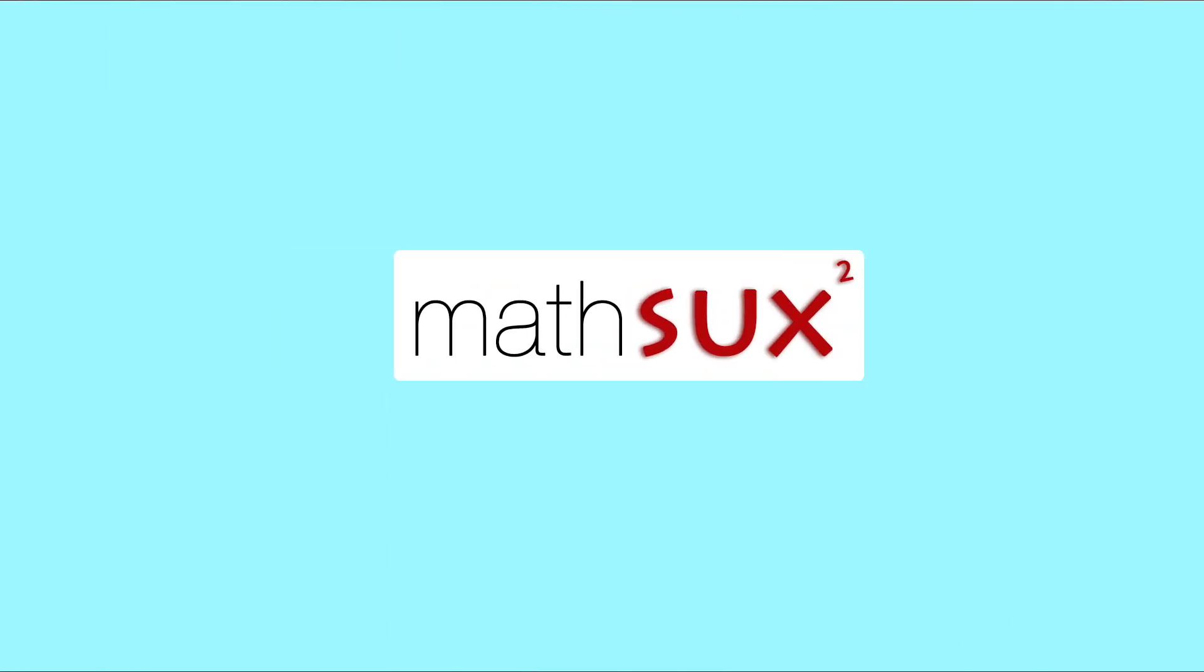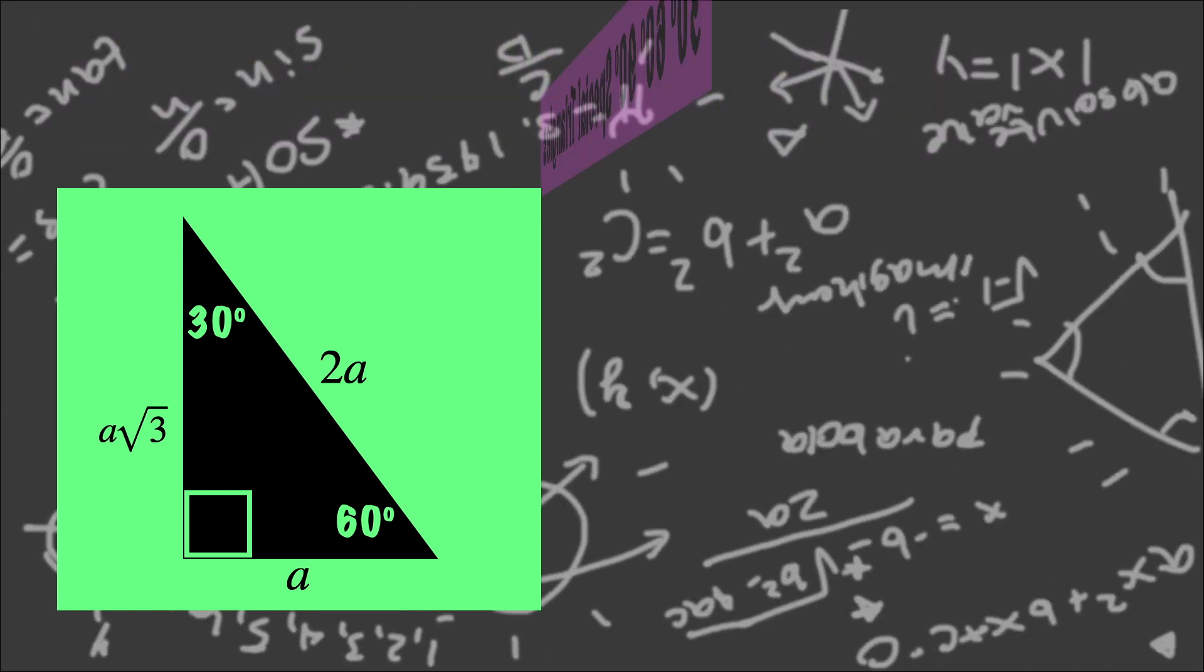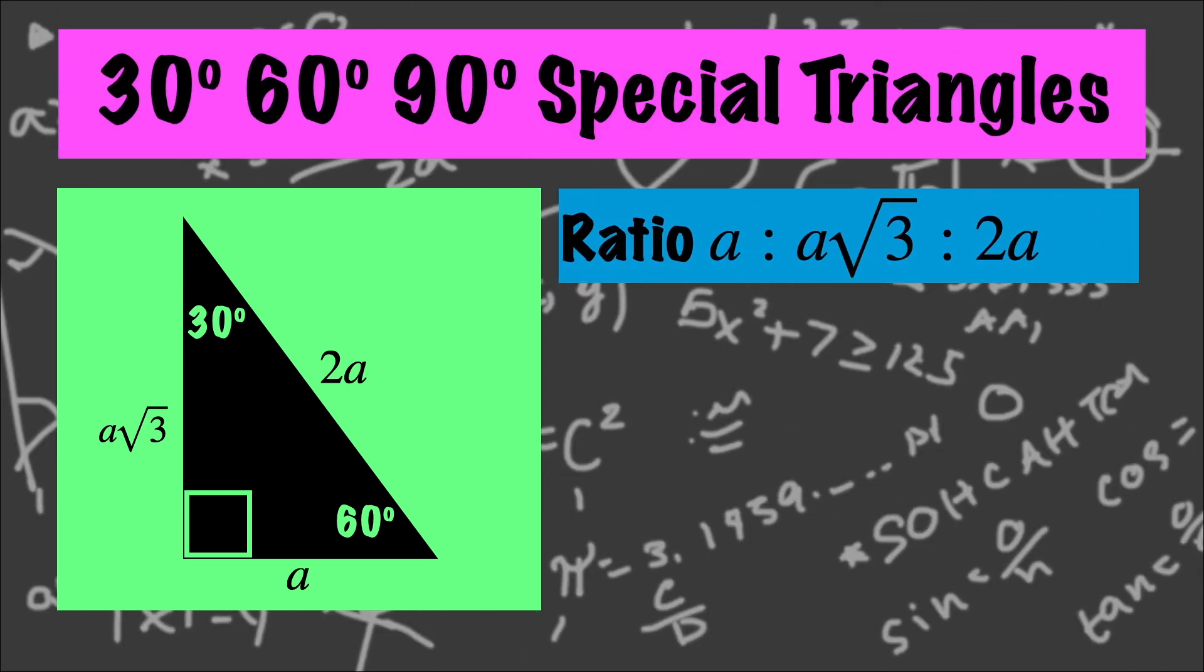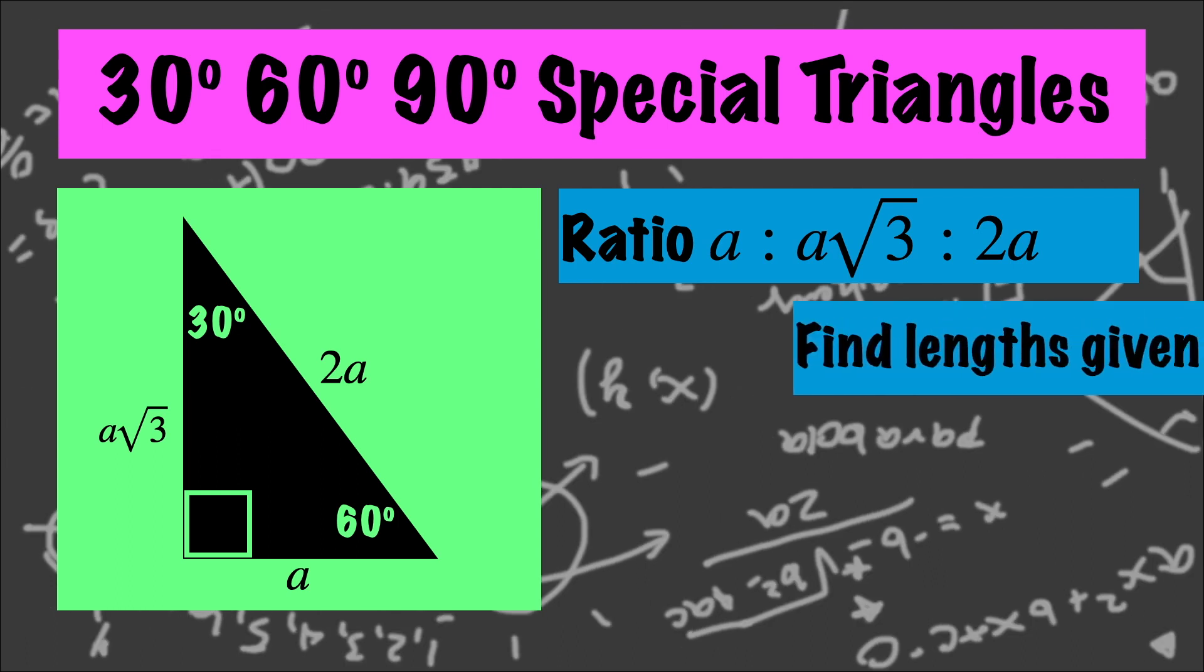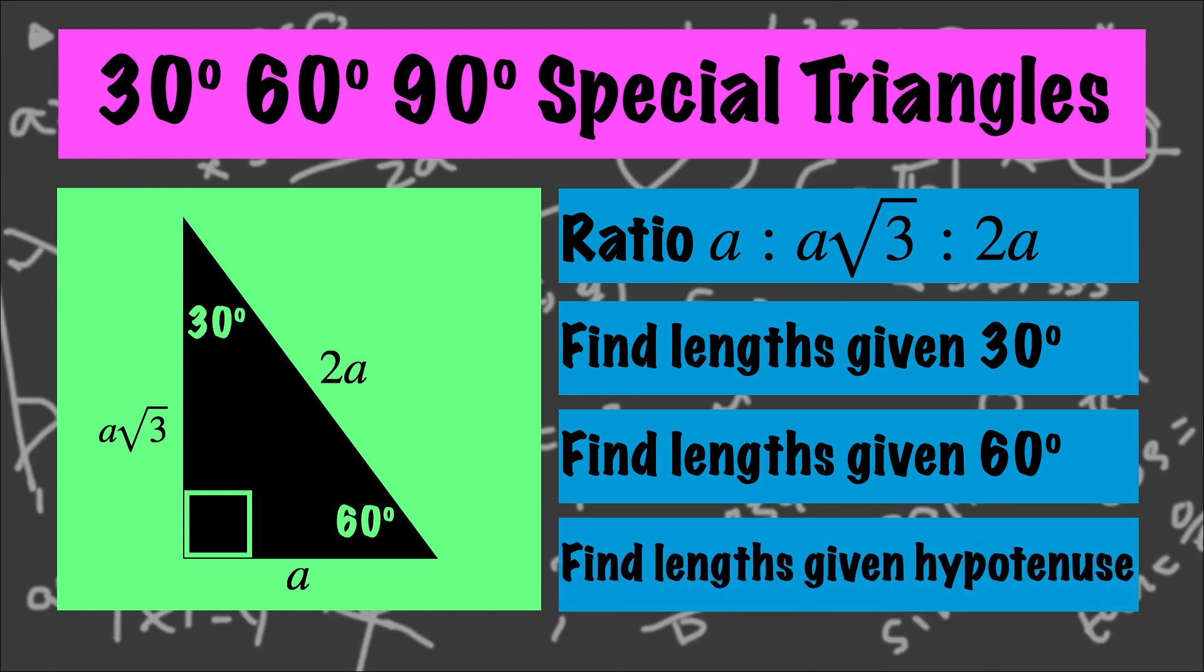Hi everyone and welcome to Math Sucks. This video is going to help you pass geometry. In this video we're going to go over 30, 60, 90 degree special triangles by looking at the ratio of its side lengths and by finding the values of the triangle when only given lengths across 30 degrees, across 60 degrees, and the length of the hypotenuse.